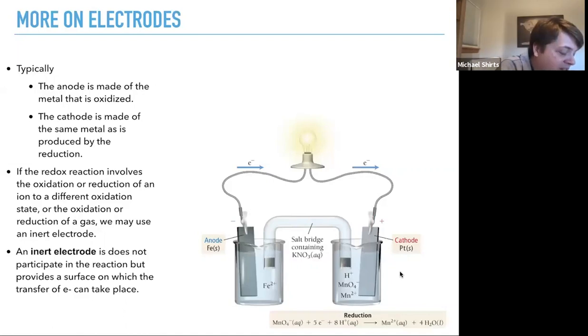So we call this an inert electrode because it does not participate in the reaction, but provides a surface on which the transfer of electrons can take place. In this case, the reduction is manganate plus 5 electrons plus 8 H+ goes to manganese plus 4 H2O liquid. So that would be an example of an inert cathode, because in this case, the reduction does not actually involve the metal. It just involves the change of reduction of two ions. There's no solid metal being created.